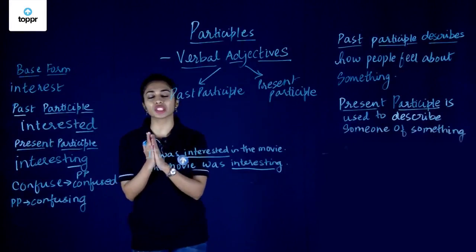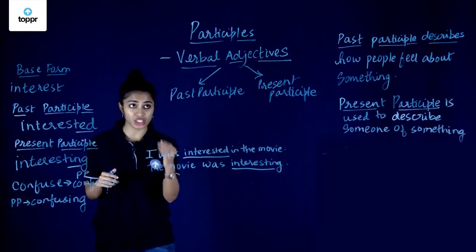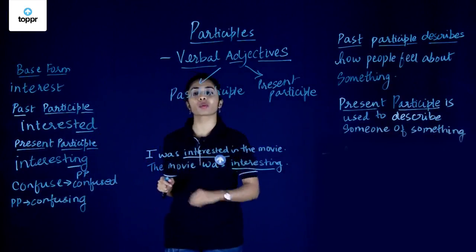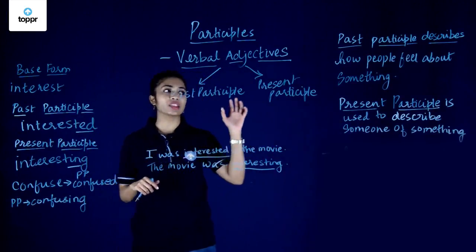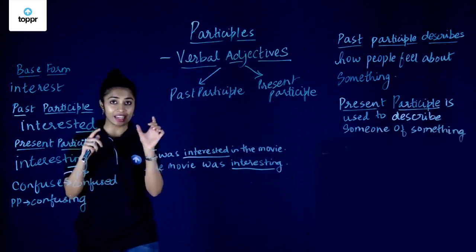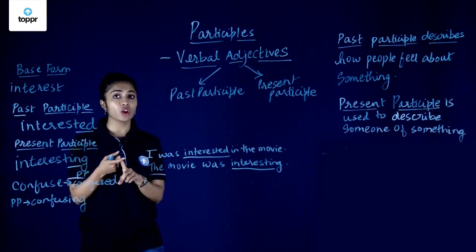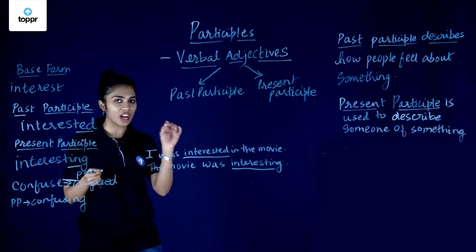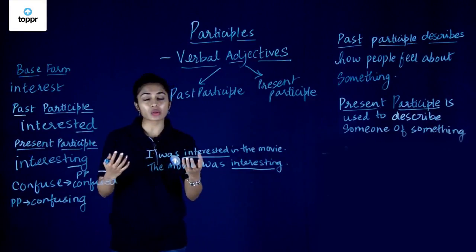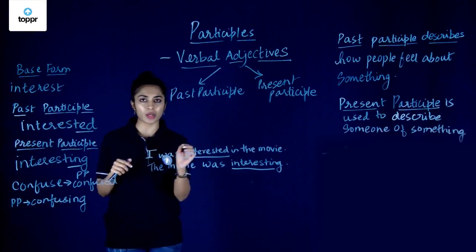To quickly summarize: participles are verbal adjectives. They come in two forms — the past form and the present form. We form the past participle of a regular verb by adding -ed, and we form the present participle by adding -ing. The past participle is used to describe how someone feels about something, whereas the present participle is used to describe someone or something.